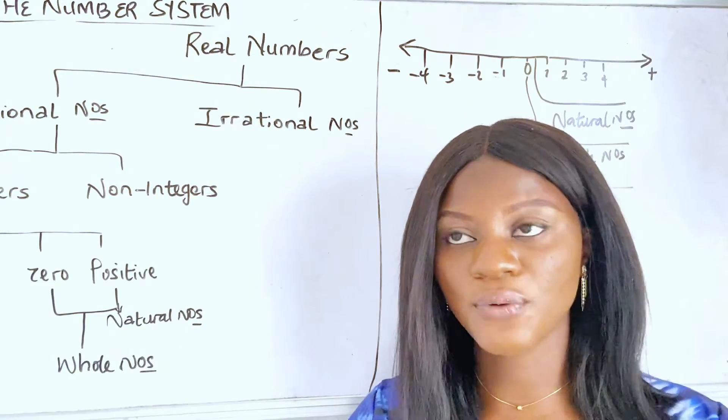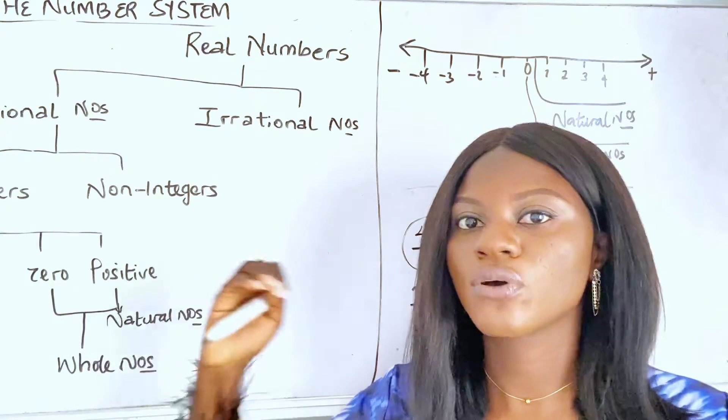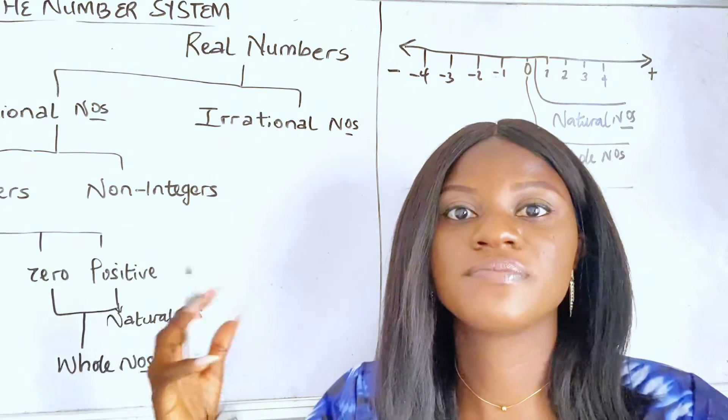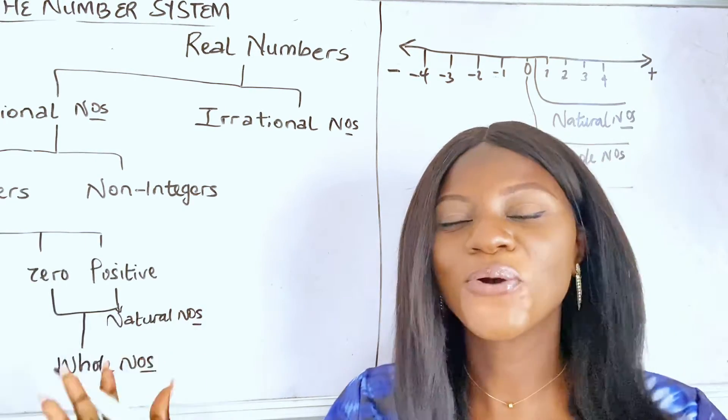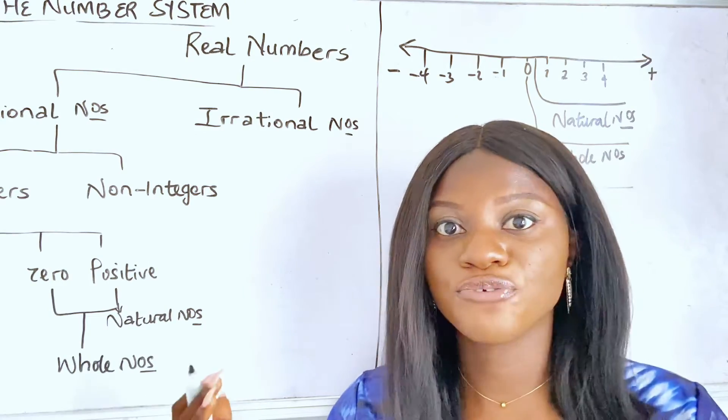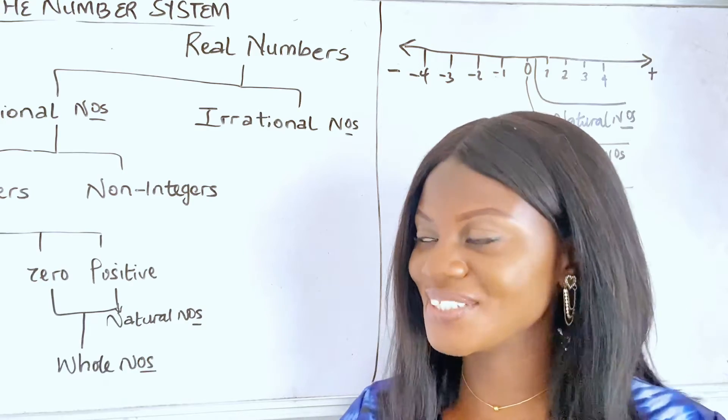But when you divide an irrational number, where you have things like pi, three point one, seven, continuously. Right? But rational numbers, rational. When something makes sense. That's how I always think about it. When something makes sense. Like, you know, being irrational. Meaning, it's not making sense. That's how I think about it. Okay?